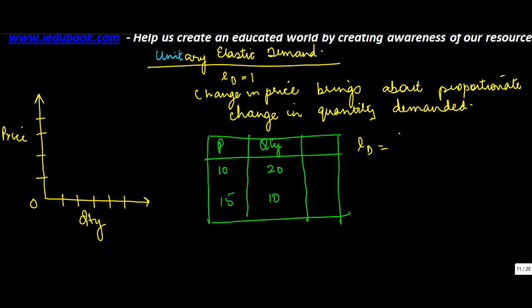that will be equal to change in quantity, which is Q2 minus Q1 upon Q1, divided by P2 minus P1 divided by P1. So what's my Q2? 10. What's my Q1? 20. My Q1 is 20, equals 10 divided by 20. Similarly for the price, what's the second price? 10 minus 20 divided by P1, which is 20, or 10 divided by 20.